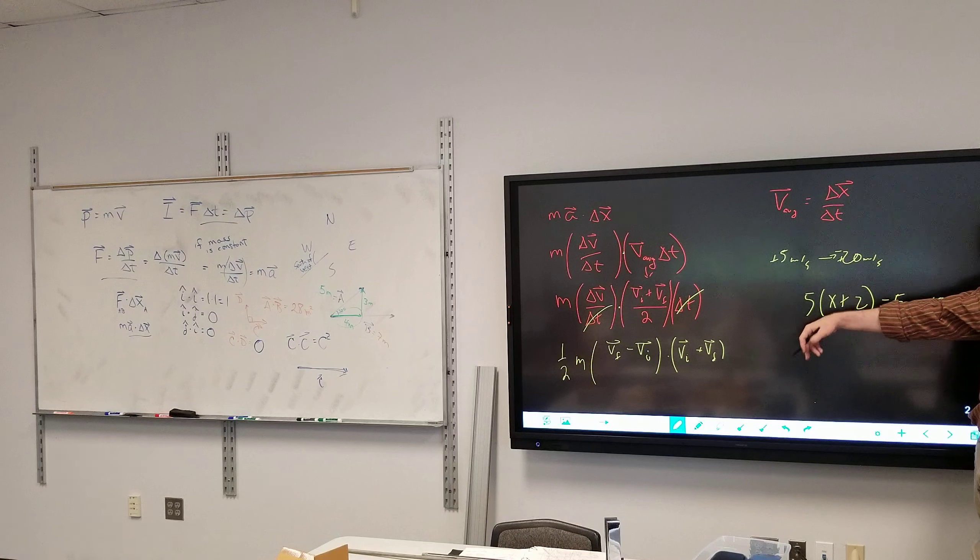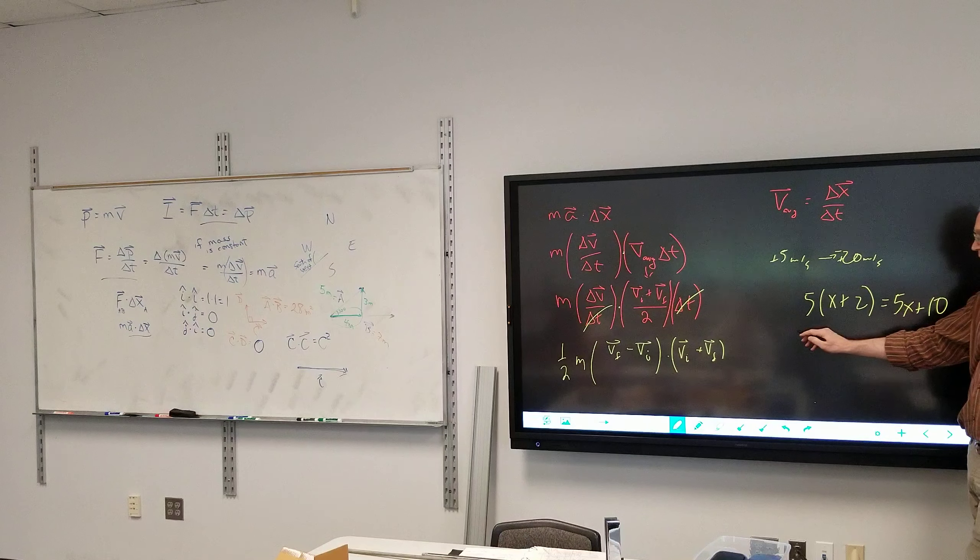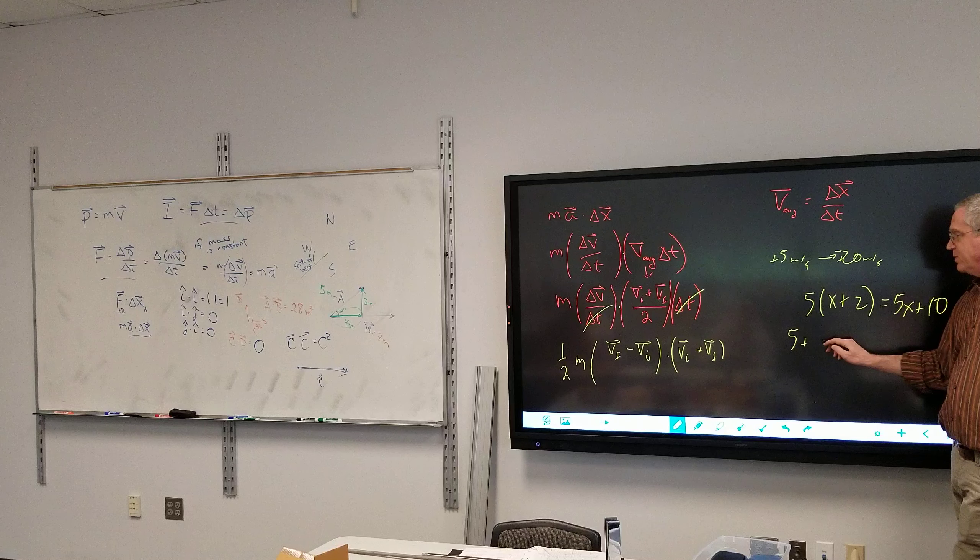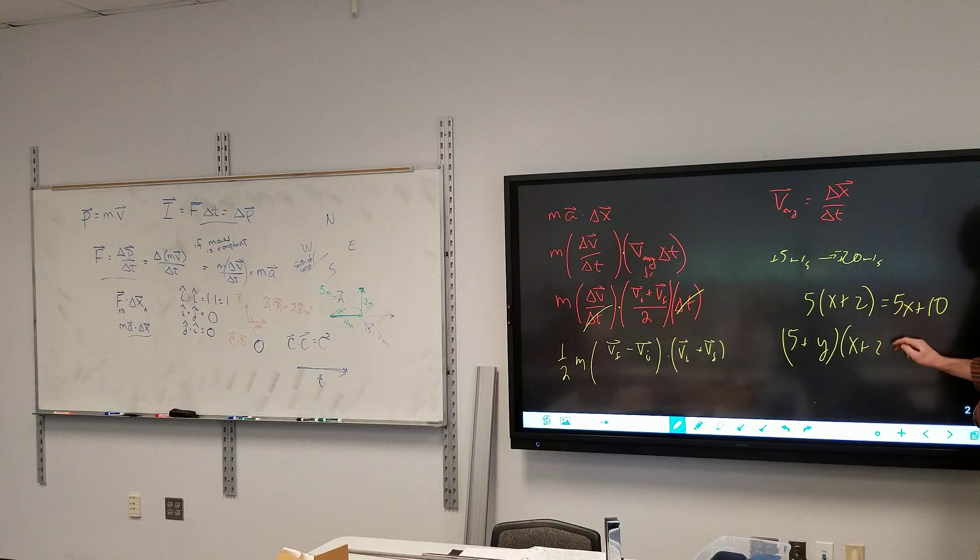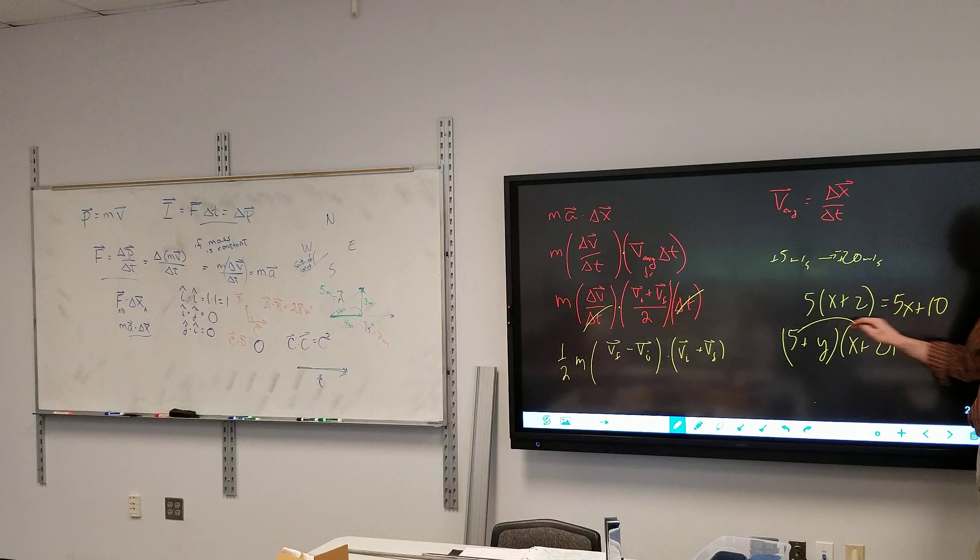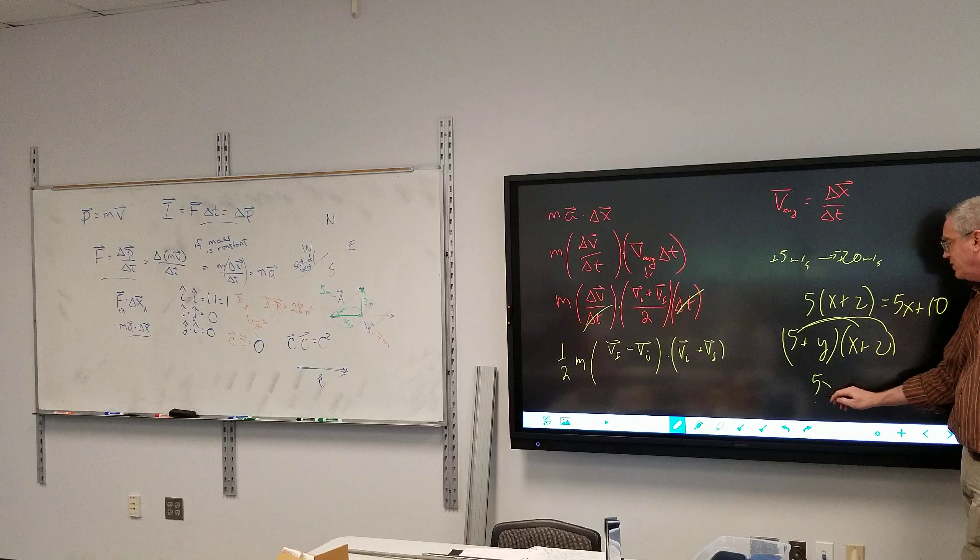This is just the same except we do it an extra time. So if I have 5 plus y times x plus 2, well first you do the 5 and then you do the y, so I get 5x plus 10.